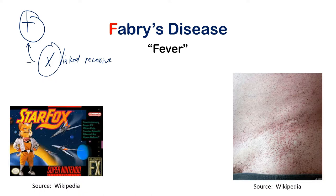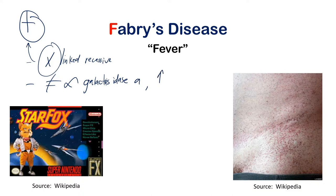So Fabry's disease is X-linked recessive, which is unique among the others. The defective enzyme in Fabry's disease is alpha-galactosidase A. Because of this deficiency, you're going to have a buildup of ceramide trihexoside.